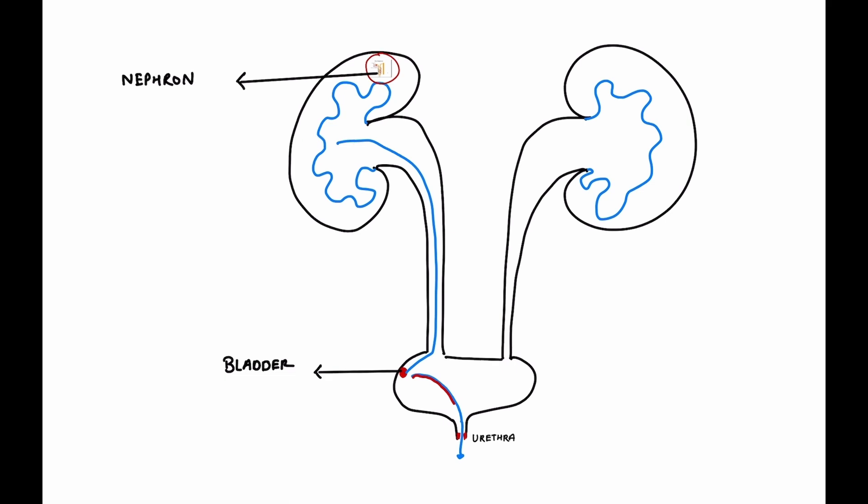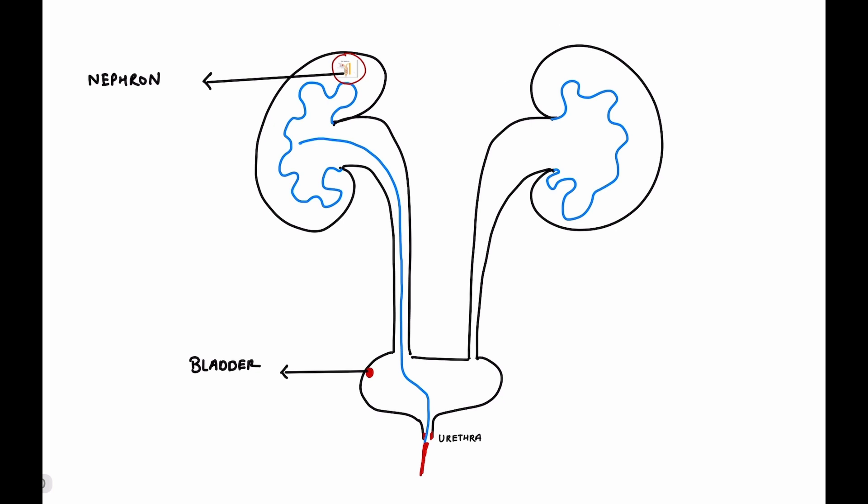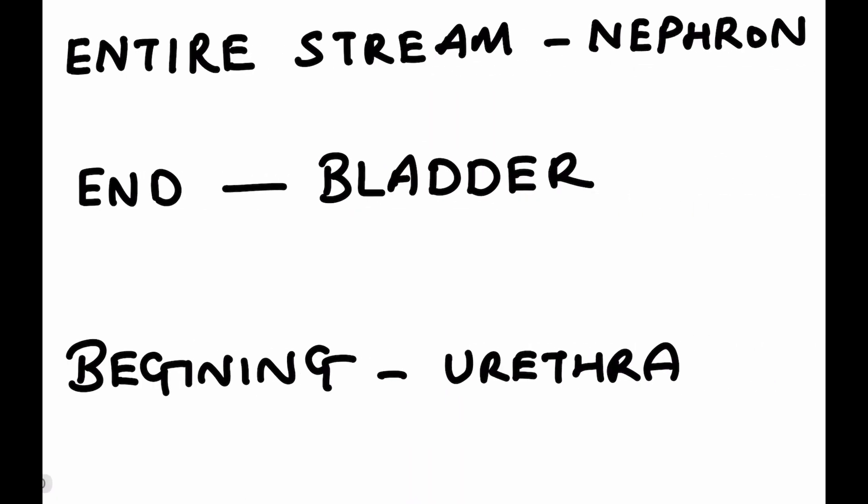Finally, let's talk about urethral bleeding. In this case, bleeding starts from within the urethra. So when the urination starts, the first part of the stream will be red or blood stained and the rest will be clear. This pattern suggests bleeding from the urethra.